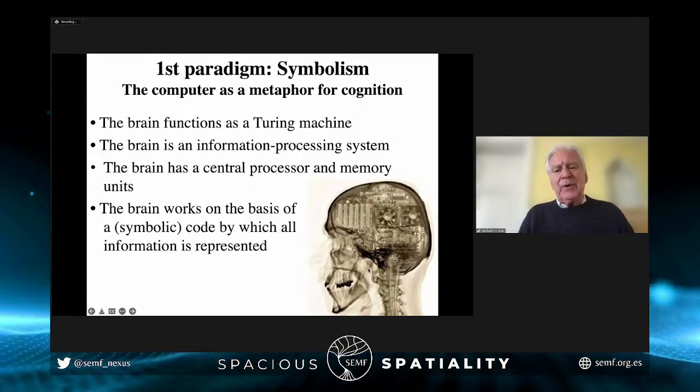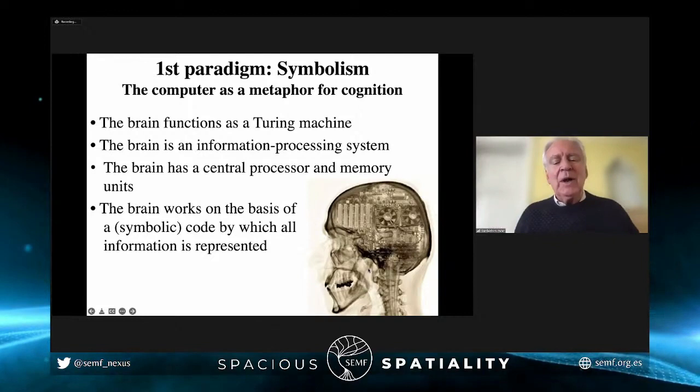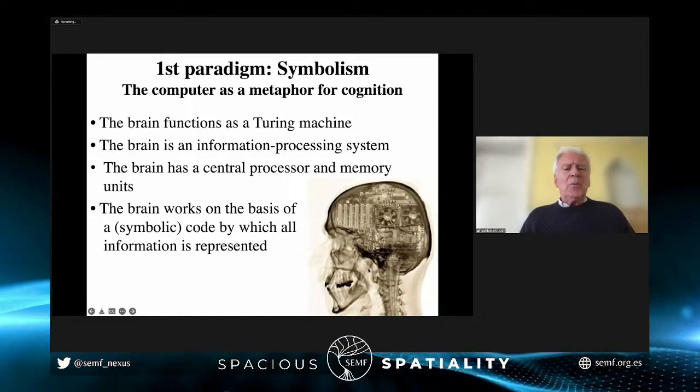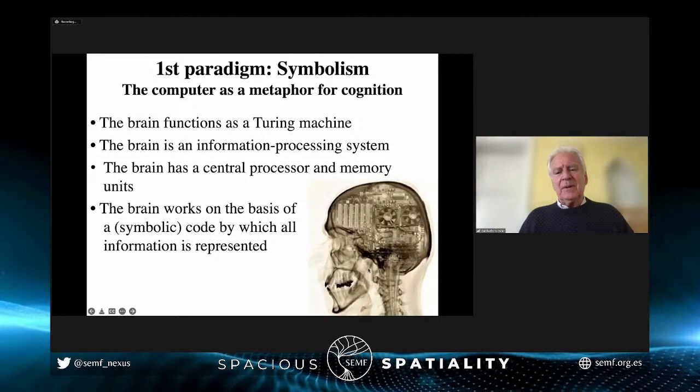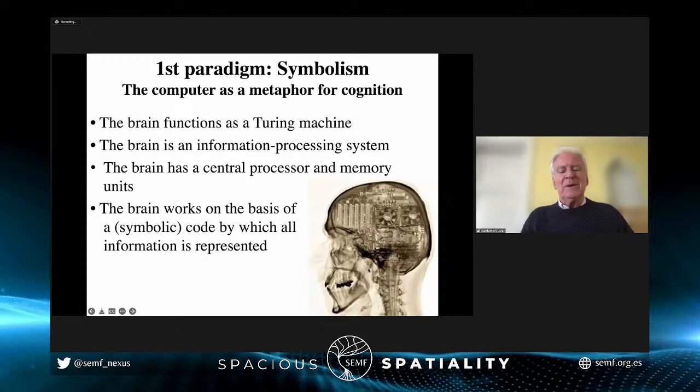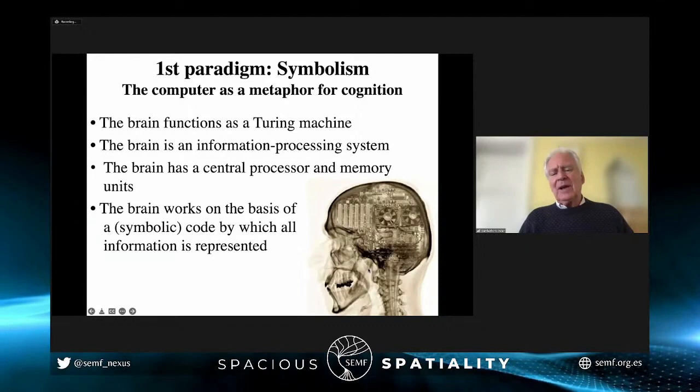Part of early cognitive science said there is some kind of central processor and memory units for short-term and long-term memory. This paradigm was built on the metaphor that the brain is a computer. Another assumption is that there is some kind of code representing all information — and maybe the most famous version is Gary Fodor's idea of mentalese: a mental language where all information is represented and everything is done by biological calculation.